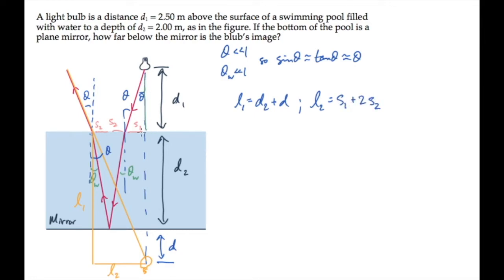Look first at this right triangle I'm outlining in green. Tangent of that angle theta is the ratio of opposite to adjacent sides. That's s1 over d1. We can make the approximation that tangent of theta is approximately theta, and solve this for s1. It's d1 times theta. I'll move that result up here for safe keeping.